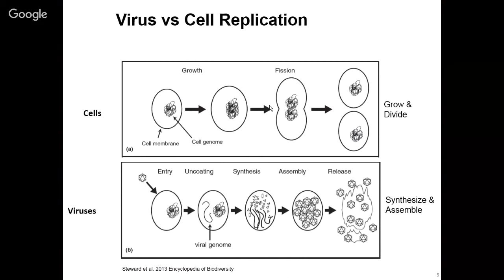Viruses are completely different. The virus has to encounter a host cell and get its genome inside. In the process of doing that, the virion — the virus as a particle — ceases to exist. That never happens with a cell. A cell is always there; it gets bigger, it splits into two. Here, the virion ceases to exist — it's just the genome inside the cell. Rather than dividing like cells do, the virus uses the host cell machinery to make all the precursors needed to build a new virus, creates all the parts, and then they get assembled. It's a fundamentally different replication process.